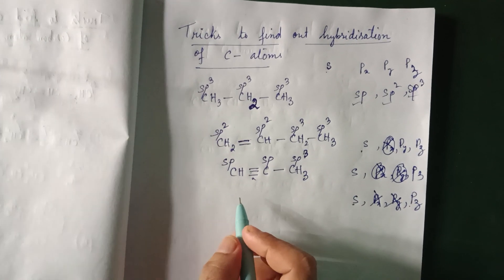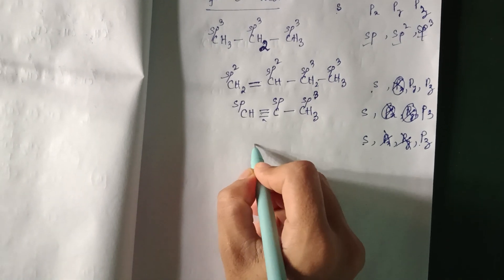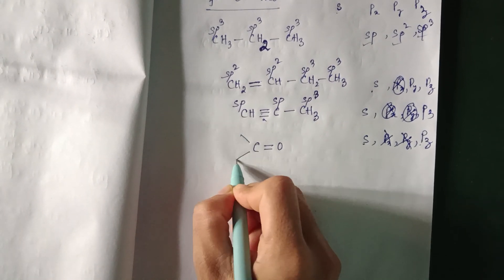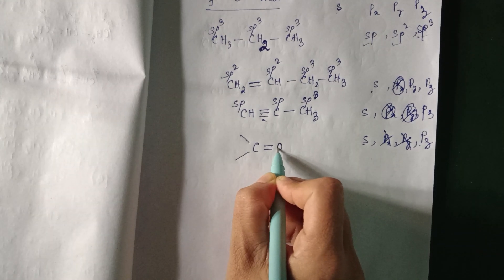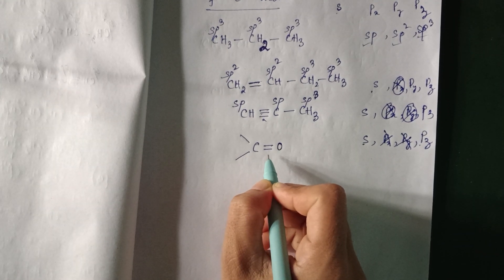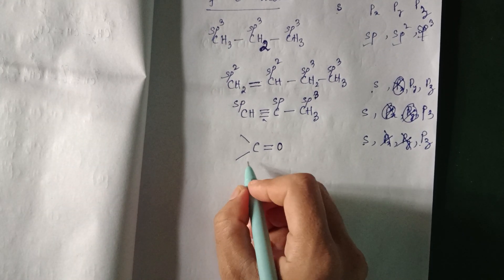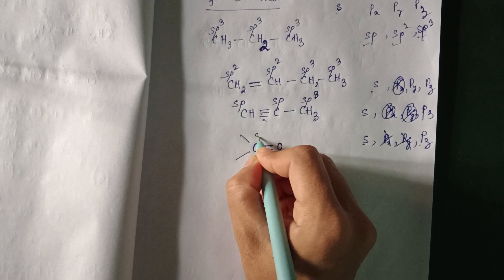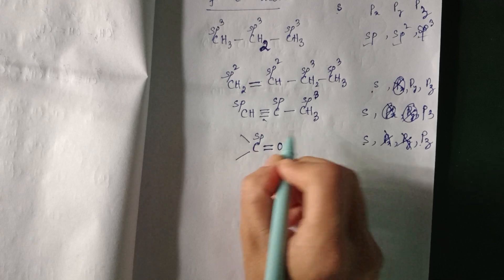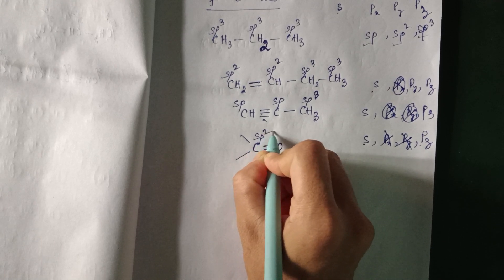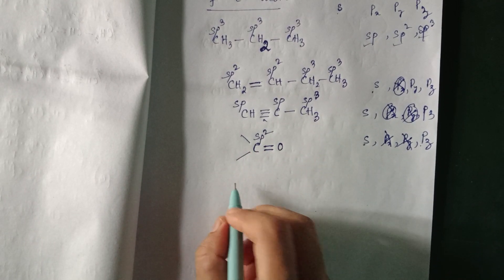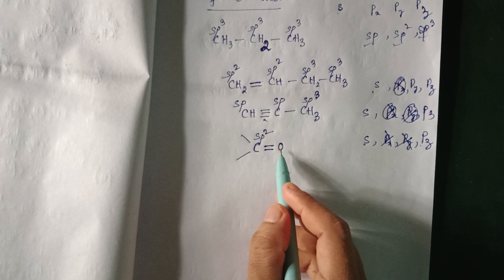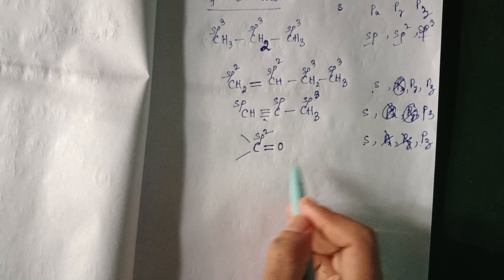What if carbon is double-bonded to a different atom, like oxygen? Suppose carbon has a double bond to oxygen. The same rule applies: one pi bond means one p orbital is utilized, leaving two p orbitals and one s orbital, so this carbon is also sp2 hybridized. These short tricks can be applied to other elements as well.